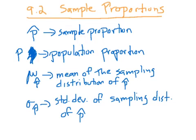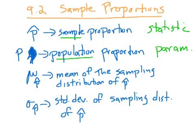p-hat is a sample proportion — that would mean you asked 15 people, what percent out of that proportion would it be — whereas p is the population proportion. The sample proportion is a statistic because it comes from a sample. The population proportion is a parameter because it comes from a whole population. We talked about these before in section 9.1, but now we're going to review them. The mu of p-hat is the average of all possible p-hats, or the mean of the sampling distribution of p-hat.